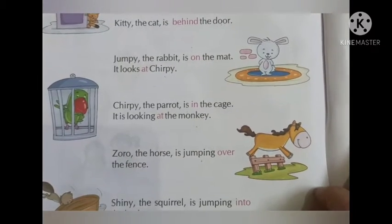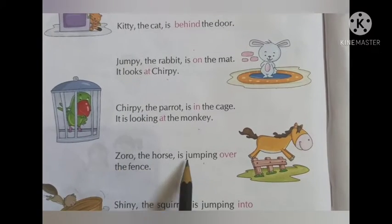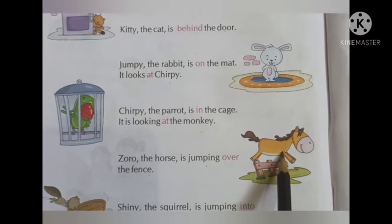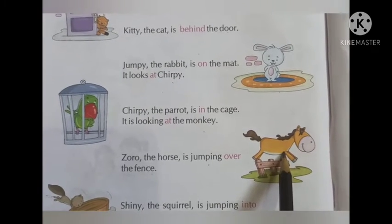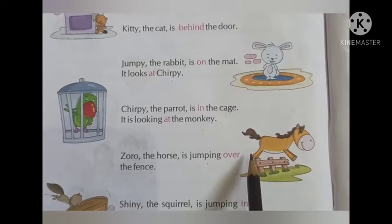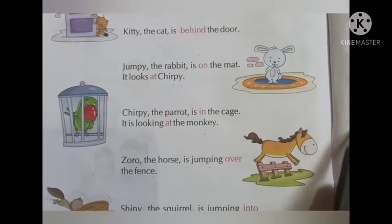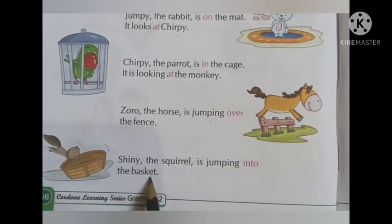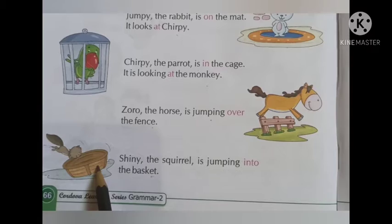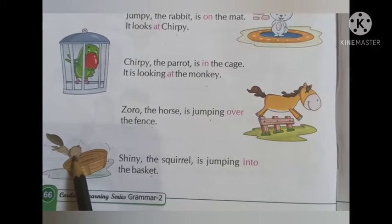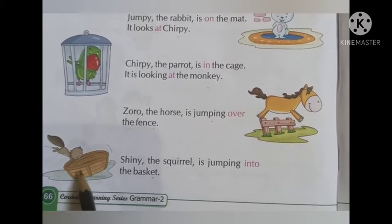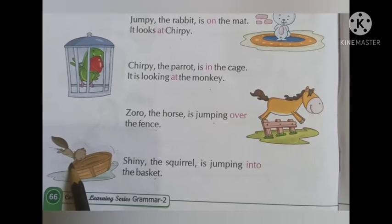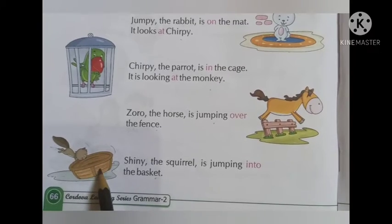The next is Zoro the horse, who is jumping over the fence. In this picture you can see the horse named Zoro jumping over the fence. The next is Shiny the squirrel, who is jumping into the basket. You can see a basket here — it is empty with a lot of space, and so we say Shiny the squirrel is jumping into the basket.